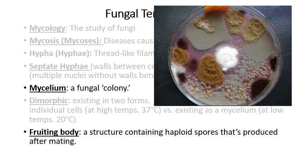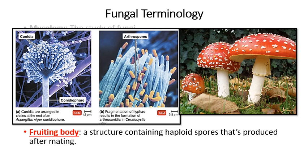Here's a close-up — this is a false-color scanning electron microscope image of a conidia, which is a type of fruiting body for one type of fungus. These are all spores about to come flying out. Here's another fruiting body for another type of fungus, and here's a fruiting body for Amanita muscaria, which is a deadly type of toadstool.